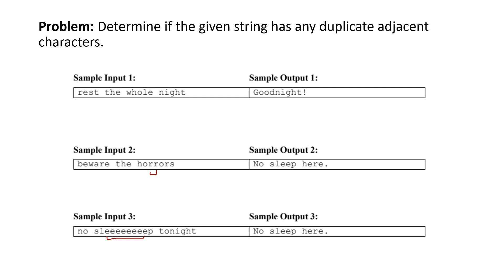In general, your program will check each pair in the string one at a time — the 0 and 1 index character, then the 1 and 2, and the 2 and 3 — until it either reaches the end of the string like in sample case 1, where it should return the appropriate value or output 'goodnight,' or like in sample case 2, it will hit the adjacent characters that are the same and then output 'no sleep here.'